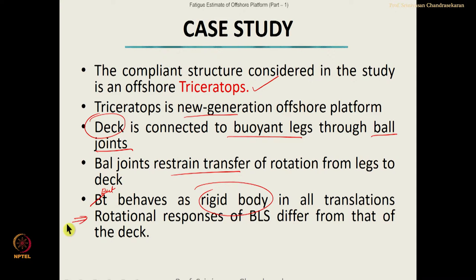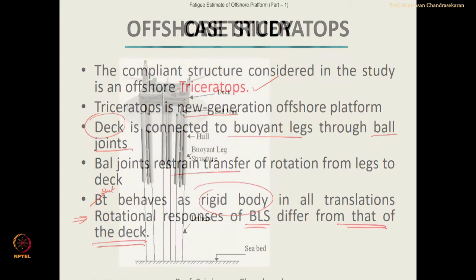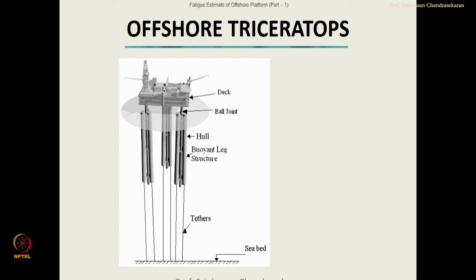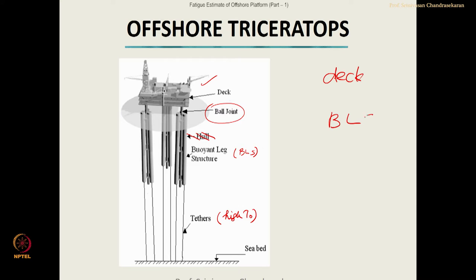The rotational responses of the buoyant leg differ from that of the deck. The deck has all facilities meant for offshore drilling, production, etc. The buoyant legs are generally in groups, briefly called buoyant leg structures (BLS). BLS are connected to the deck through ball joints, and buoyant legs are further connected to the seabed using tethers with very high initial pretension. The four components are: the deck, the buoyant legs, the ball joint, and the tethers.